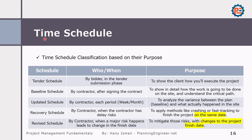When it comes to time schedule classifications based on purpose, we have five types. The tender schedule is the first schedule submitted to the client, usually during the tender stage, to show how you will execute the project. After the project is awarded, the contractor does the baseline schedule after signing the contract, to show in detail how work will be done on site and to understand the critical path. Once the baseline schedule is created, it needs to be updated — weekly or monthly — to analyze the variances between the planned baseline and what actually happened on site.